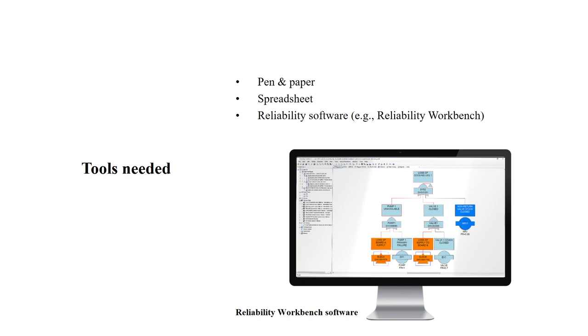What tools do we need? Pen, paper, spreadsheet, and reliability software. An example of reliability software is the Reliability Workbench; other software in this field may also be used. That is all for this particular tool, and we are almost at the end of the discussion of different tools and techniques about cognitive and behavioral ergonomics.